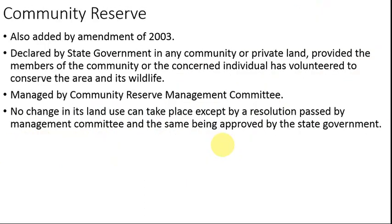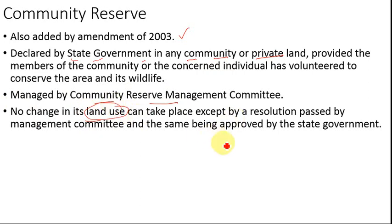Community reserves were also added by the 2003 amendment to the Wildlife Protection Act 1972. They are declared by the state government but, unlike conservation reserves, can be declared on community or private land. The condition is that the members of the community must have volunteered to safeguard the environment and wildlife residing there. Community reserves are managed by a Community Reserve Management Committee. Any change in the pattern of land use must be passed by a resolution of that committee and also approved by the state government.